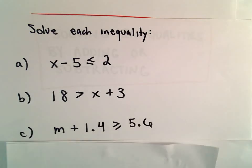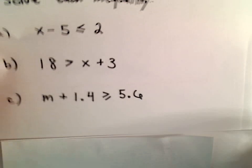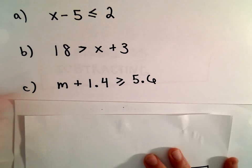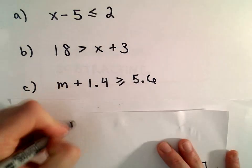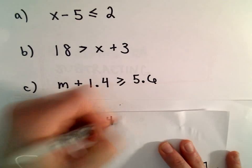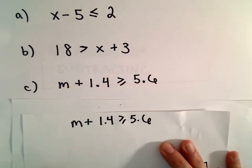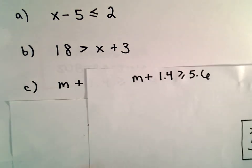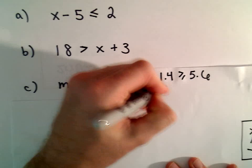Alright, one last example here, part C. There's some decimals here, but that doesn't change anything at all. So m plus 1.4 greater than or equal to 5.6. Since we're adding 1.4, I'm simply going to subtract 1.4 from both sides.